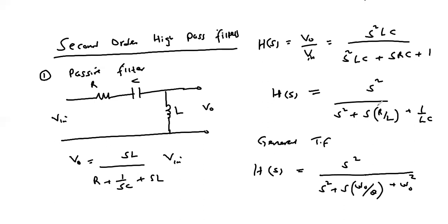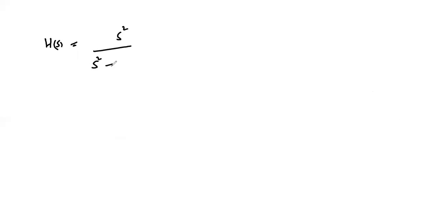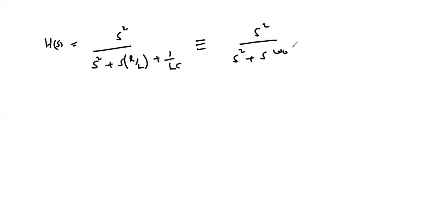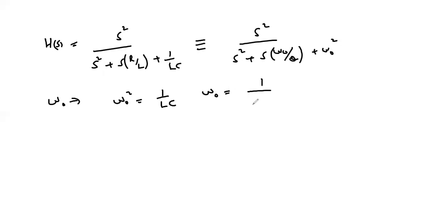If we compare the two transfer functions, we notice that our transfer function H(s) is s² over s² plus s(R/L) plus 1/LC. We compare this with s² over s² plus s(ω₀/Q) plus ω₀². We see that ω₀² equals 1/LC, and hence ω₀ equals 1 over the square root of LC. Therefore the cutoff frequency for that filter will be 1 over the square root of LC.